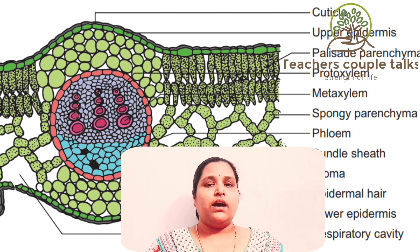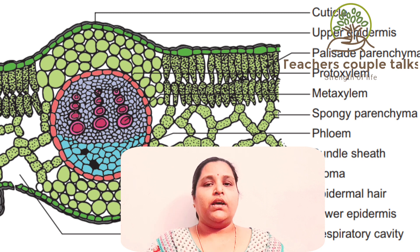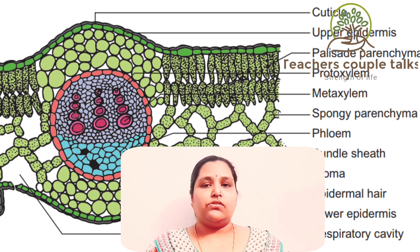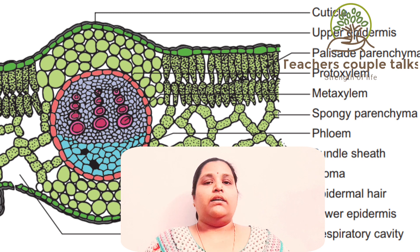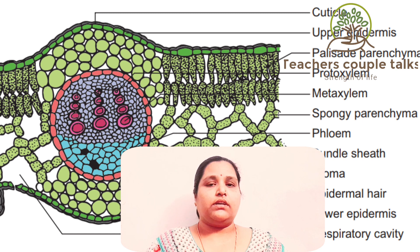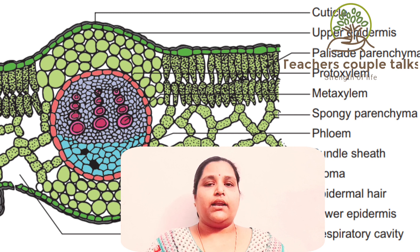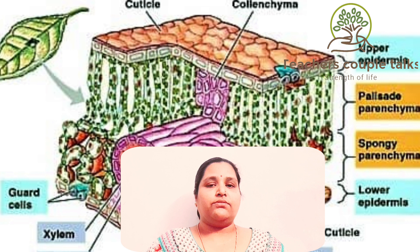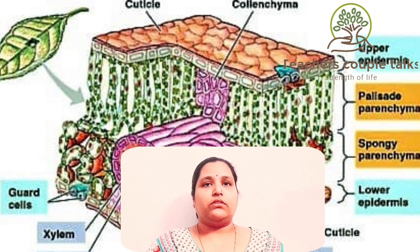When carbon dioxide is diffused through the opening stoma into the stomata, it reaches the palisade parenchyma and spongy parenchyma of the leaf and performs photosynthesis with the help of water conducted by the xylem. It prepares food materials, stored and transported by phloem, reaching the plant in the form of starch. This process is called photosynthesis.